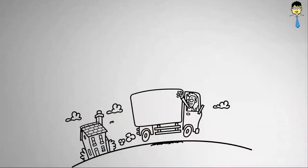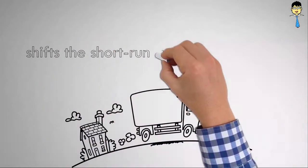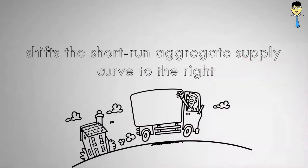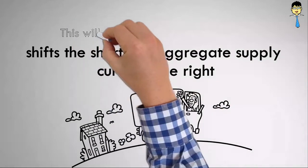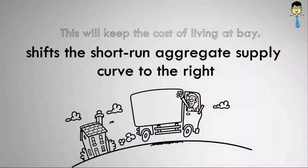All the effects stated above shift the short-run aggregate supply curve to the right, leading to a reduction in the general price level. This will keep the cost of living at bay.